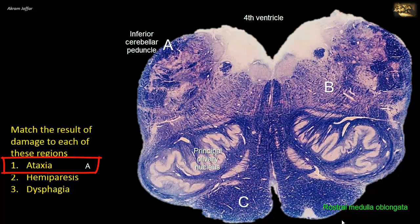B is located in the reticular formation and represents the region of the nucleus ambiguus. The nucleus cannot be clearly seen because it is formed of a small group of motor neurons that aggregate medial to the spinal nucleus of the trigeminal and above the dorsal accessory olivary nucleus. The nucleus ambiguus is the source of motor fibers providing innervation to the muscles of the pharynx, palate, and larynx, and to the striated muscles of the upper end of the esophagus — most via the vagus nerve. Damage thus results in difficulty in swallowing, that is, dysphagia.